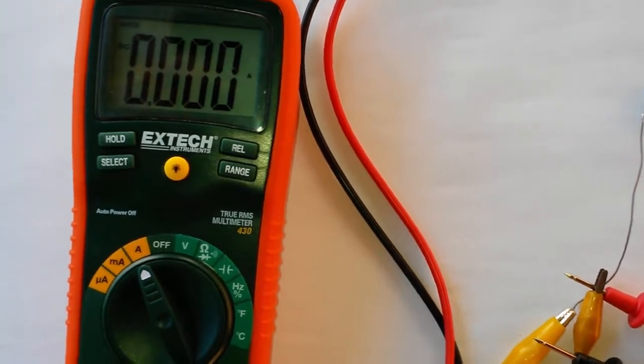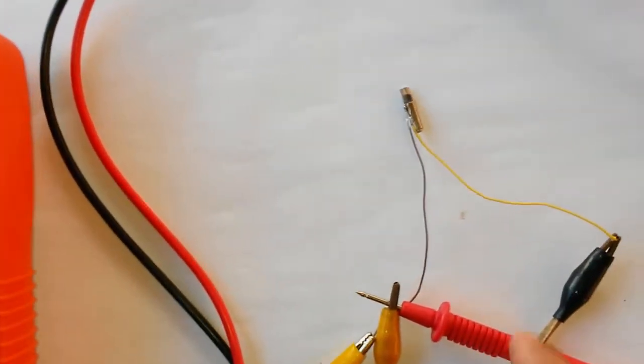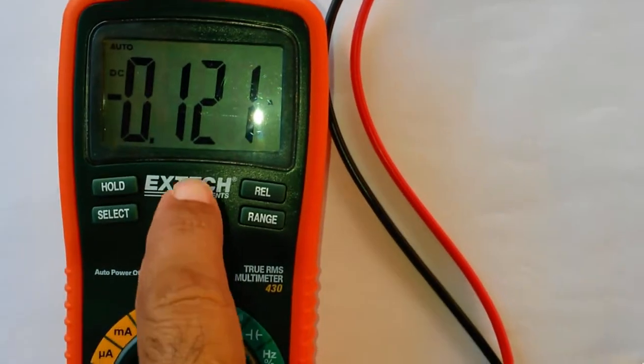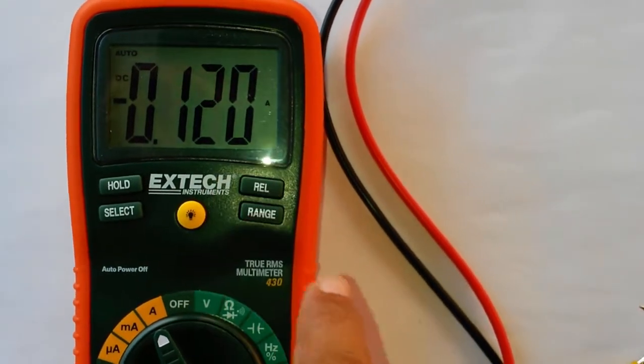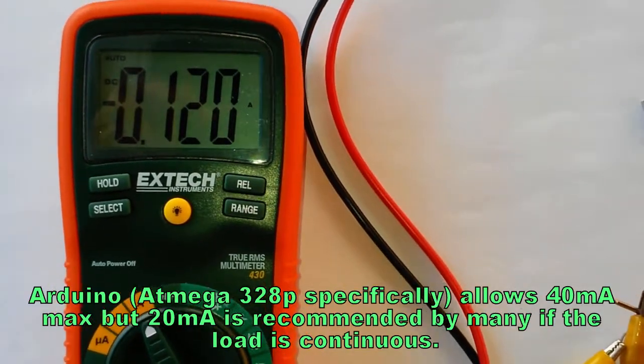Jumping this on now, it will be negative because I was too late to switch around the connections. So we can see, it is jumping a lot less, 120 milliamps. Again, still way too high, but at 1.7 volts, we're getting 120 milliamps.